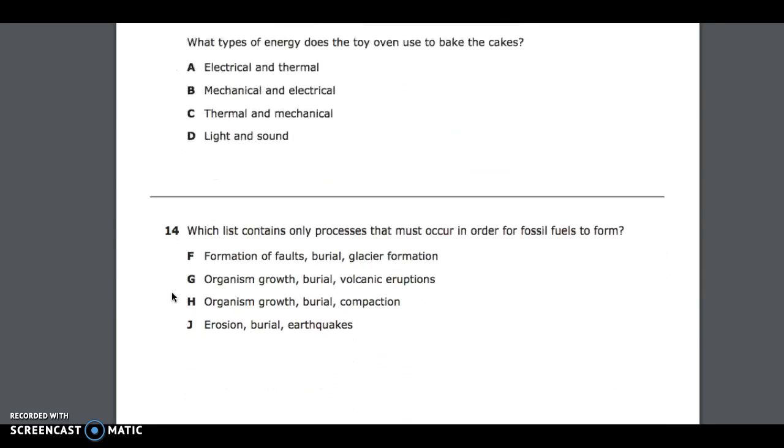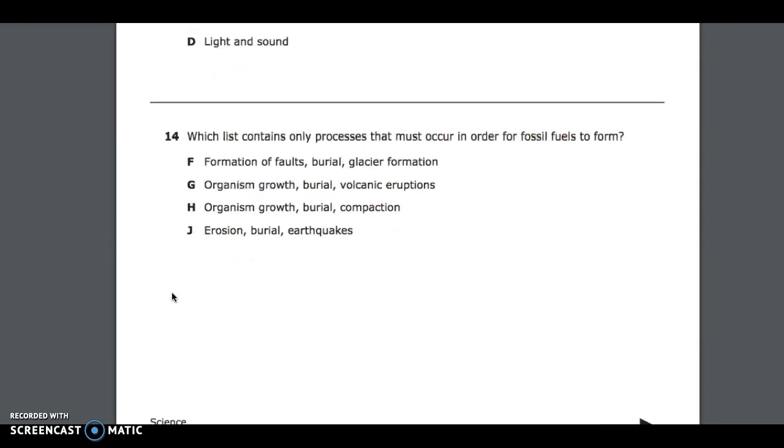Number 14. Which list contains only processes that must occur in order for fossil fuels to form? F, formation of faults, burial, glacier formations; G, organism growth, burial, volcanic eruptions; H, organism growth, burial, compaction; J, erosion, burial, earthquakes.